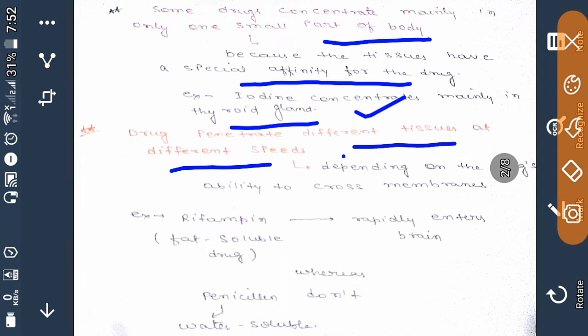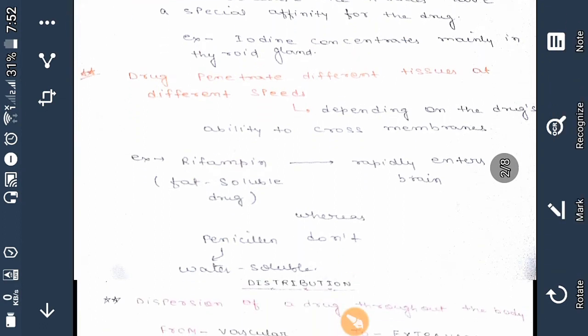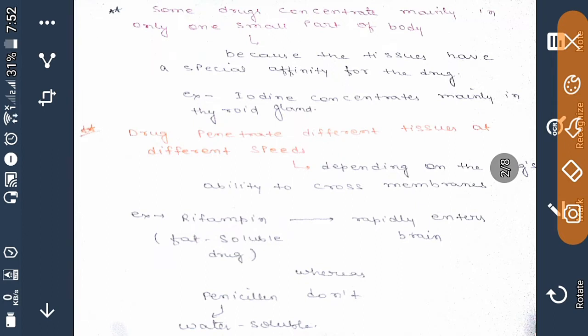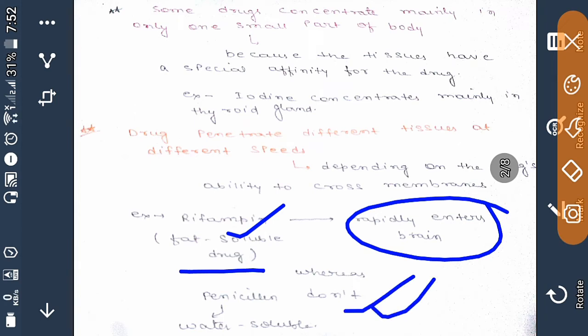One example is rifampicin, which is a fat-soluble drug, so it rapidly enters the brain. Whereas penicillin, which is water-soluble, doesn't enter brain rapidly.